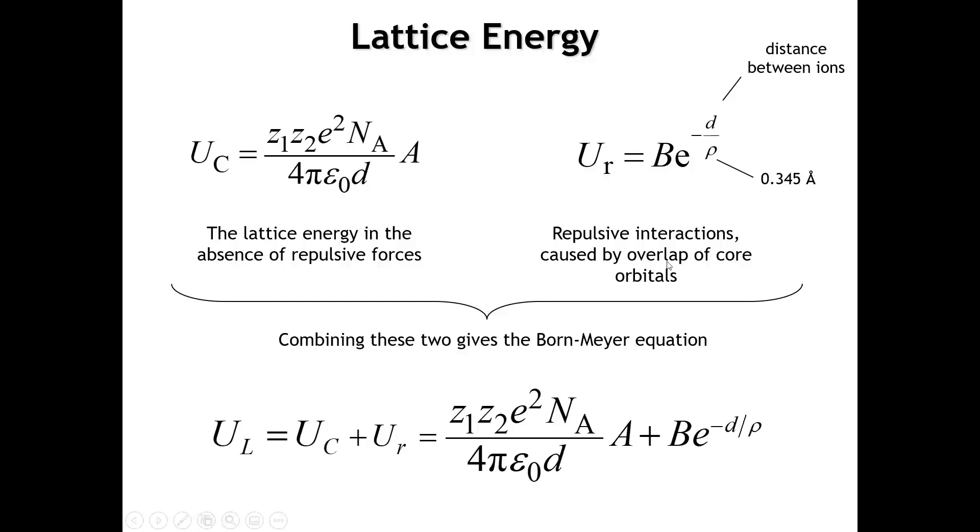We're going to approximate that with this exponential function. Here B is just an empirical constant, and rho is also another empirical constant, although we're going to set rho to be 0.345 angstroms. If we know the distance between two ions, we can calculate the repulsive energy between them. This is going to be a positive number, and this UC, the Coulombic energy of the lattice, is going to be negative.